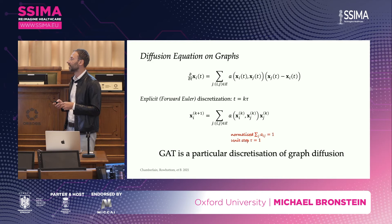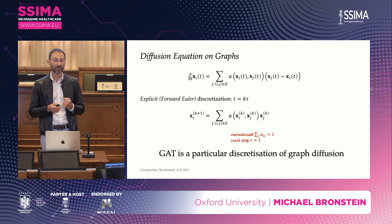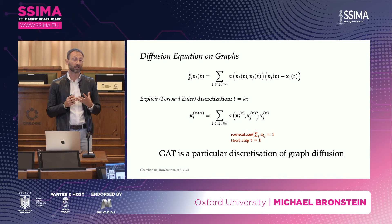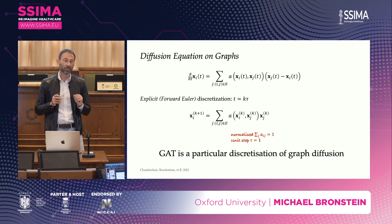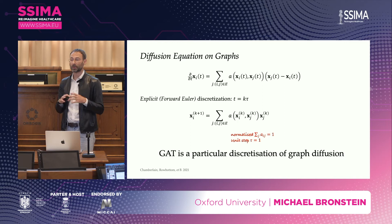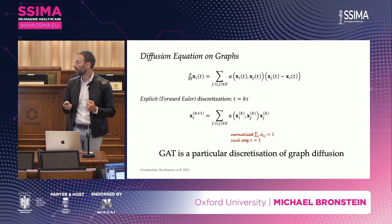Not surprisingly, the Euler explicit discretization looks like a graph attention network — you can interpret the diffusivity function as attention. In graph attention networks this function is learnable. In more recent work we show that graph convolutional networks can also be derived as gradient flows: you have something like a generalized energy on a graph, and instead of parameterizing every layer as in standard neural networks, you parameterize the energy. This leads to shared parameters, making the network much more efficient.